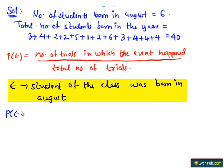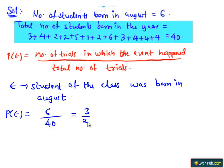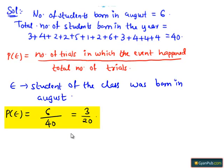P of E equals to number of students born in August, which is 6, divided by total number of students born in the year, that is 40, which equals 3 divided by 20. Therefore, the probability that a student of the class was born in August is 3 divided by 20.